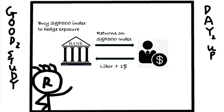Usually when a bank gets into a deal like this with any investor, they'll immediately hedge their position and their exposure. In this scenario, they'll just buy five million dollars worth of S&P 500 index. If the S&P 500 index goes up, the bank would have to pay out to the investor, but on the other side its S&P 500 position would go up as well — so the gains and losses offset each other, and the bank will still collect LIBOR plus one percent.